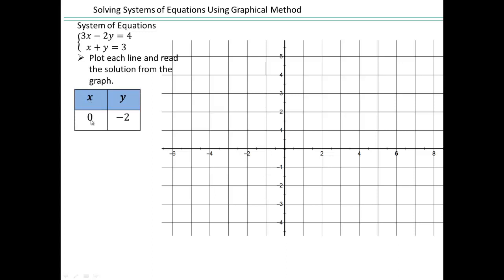Let's make an x-y chart. Put zero in for x: 3 times 0 is 0, so negative 2y equals 4, giving y equals negative 2. So (0, -2) is a point on the first line. Let's take x equals 2: 3 times 2 is 6, and 6 minus 2y equals 4 — solve that for y and you'll get y equals 1. So (0, -2) and (2, 1) are points on this first line. Let's plot them: here is (0, -2) and here's (2, 1), giving us this first line.